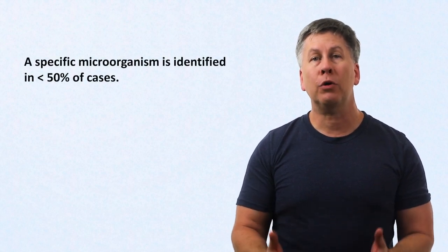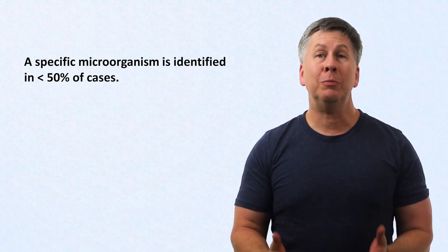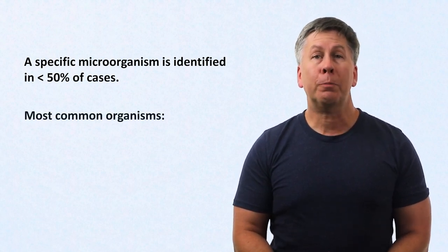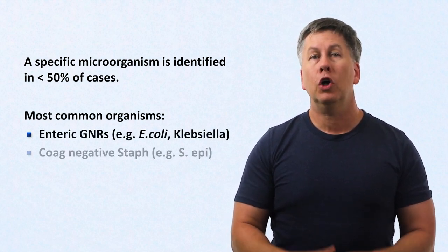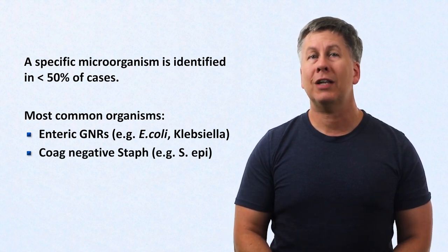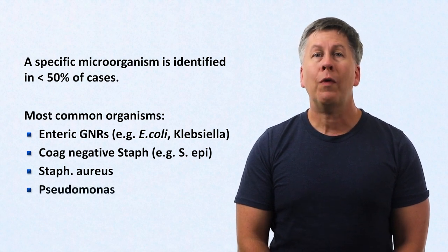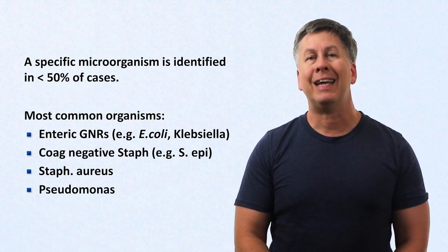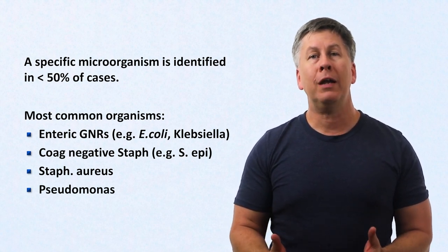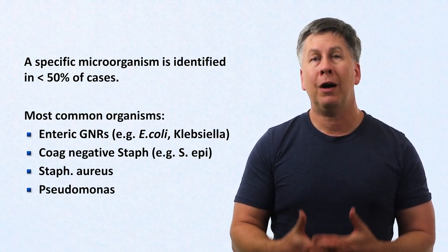Frustratingly, in cases of neutropenic fever a specific microorganism is identified in less than 50% of cases. When an organism is identified, the most common culprits are enteric gram-negative rods such as E. coli and Klebsiella, coagulase-negative staphylococci such as Staph epidermidis, Staph aureus, and Pseudomonas. While there has been much written about the shifting prevalences of gram-positive vs. gram-negative organisms, both groups remain common enough that empiric treatment should consider all of the above to be possible causes.